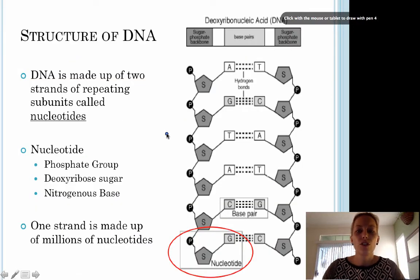Let's take a closer look at the structure of DNA. DNA is made up of two strands of repeating subunits called nucleotides. You should be familiar with the nucleotide as we studied it during biochemistry. We know that a nucleotide is the monomer form of either DNA or RNA. A DNA nucleotide is made up of a phosphate group, a deoxyribose sugar, and a nitrogenous base.